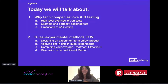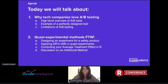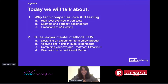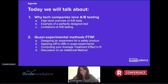Specifically, we'll be designing an experiment for a safety product together — I'll explain later what a safety product is. The quasi-experimental method we'll focus on is differences-in-differences, and we'll compute the average treatment effect in R. If we have enough time, we'll discuss an additional surprise method — my team told me to end at diff-and-diff, but if we have time I'll go over it.